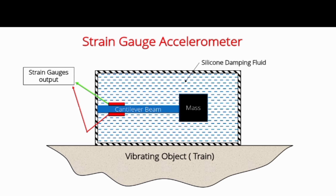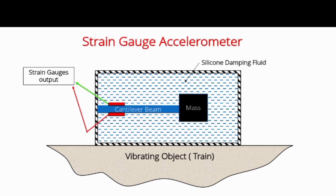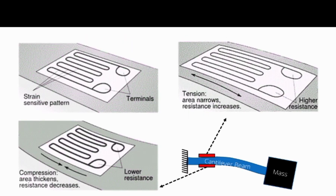In this oscillometer, mass M is connected with a thin plate. The casing is filled with silicon damping fluid. By the vibration, the output is taken. The different output is given by the oscillometer for tension, compression, and strain.